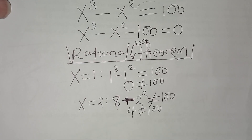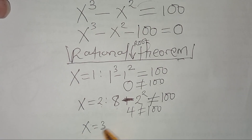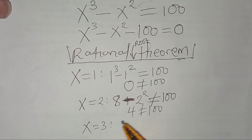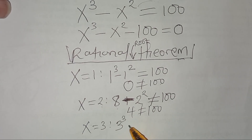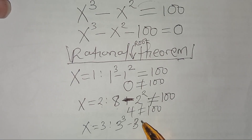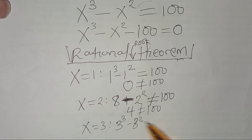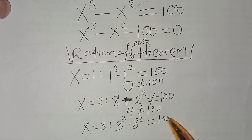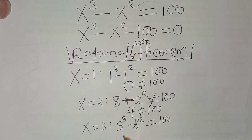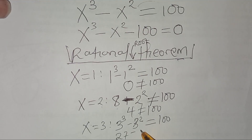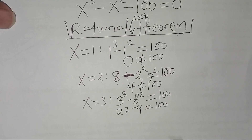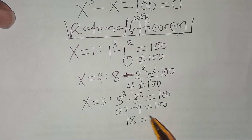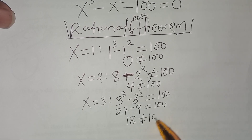Now let's check for x equal to 3. Here we'll have 3 cubed, subtract 3 squared, and check if this is equal to 100. So 3 cubed is 27, subtract 9, which equals 18, and 18 is not equal to 100.